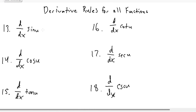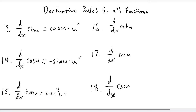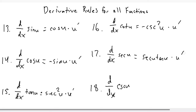Starting with number thirteen, the derivative of sine of u is going to be cosine of u times u prime. The derivative of cosine u is negative sine of u times u prime. The derivative of tangent u is secant squared of u times u prime. The derivative of cotangent u is negative cosecant squared of u times u prime. The derivative of secant u is secant u tangent u times u prime. And the derivative of cosecant u is negative cosecant u cotangent u times u prime.